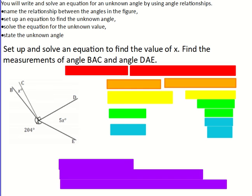Set up and solve an equation to find the value of x. Then you're going to find the measurements of angle BAC and angle DAE. So your first step is you have to name the angle relationship shown in the diagram.